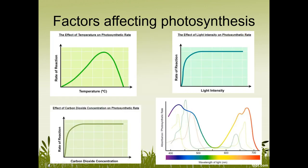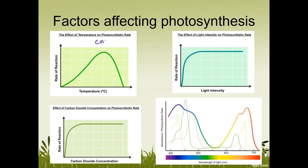Factors that affect the rate of photosynthesis: first, temperature. Photosynthesis is carried out by enzymes, so however temperature affects enzymes also affects photosynthesis. As temperature rises, the rate increases because there are more collisions — enzymes have more heat energy and react more often — up until an ideal temperature. After that, the enzymes start to denature and the rate decreases rapidly.